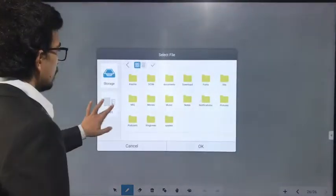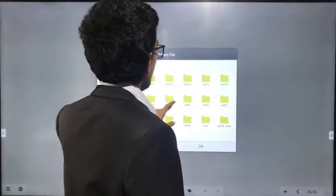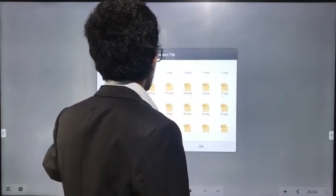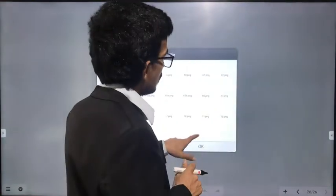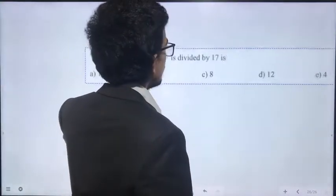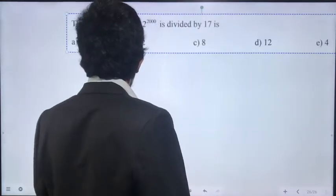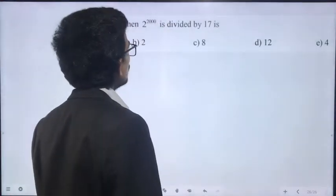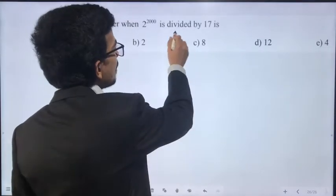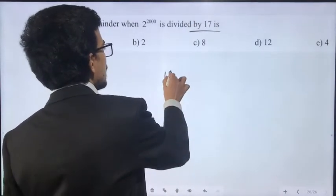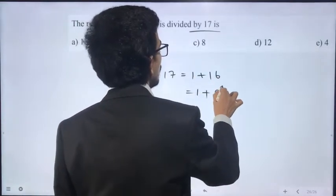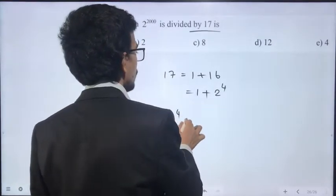Yes, welcome back. JEE Main 2018 paper. The remainder when 2^2000 is divided by 17. 2^2000 is divided by 17. That is 1 plus 16, which is 1 plus 2^4.